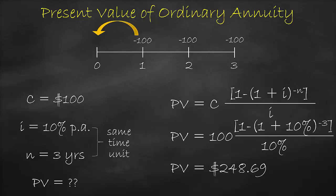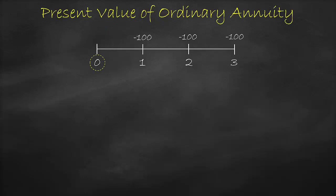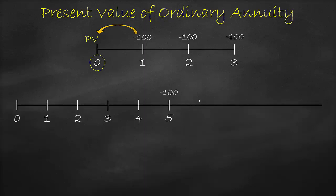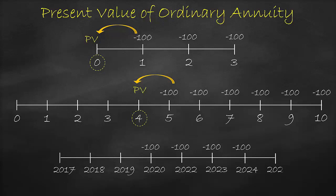Please note that the present value of the ordinary annuity formula is always one period before the first cash flow. For example, if my first equivalent cash flow is in year one, the present value will be at year zero. Or if my first equivalent cash flow is in year five, the present value will be in year four. Or lastly, if my first equivalent cash flow is in year 2020, the present value will be at year 2019.